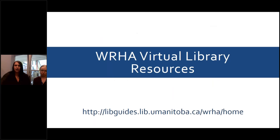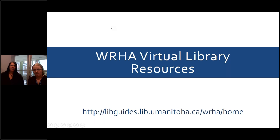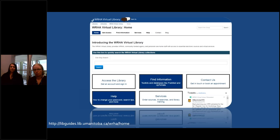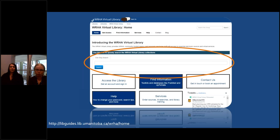Now I'm going to transfer it over to Nicole to talk about resources. The WRHA Virtual Library has lots of electronic resources that you can access from your home, your unit, your office, wherever you happen to be. From our homepage, we have a large search box right in the middle of the page. This is a quick way to search across several of our collections at once. It's not as precise as using some of our databases, but it gives you a quick way to search for a resource, a book, or something you want to look at quickly.